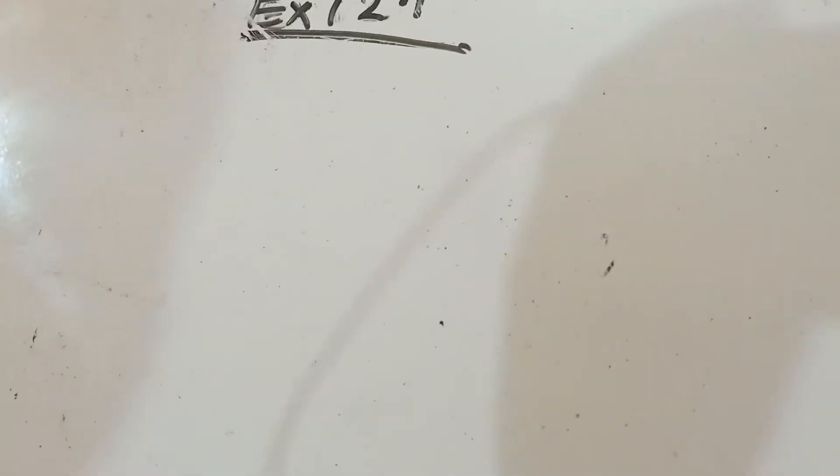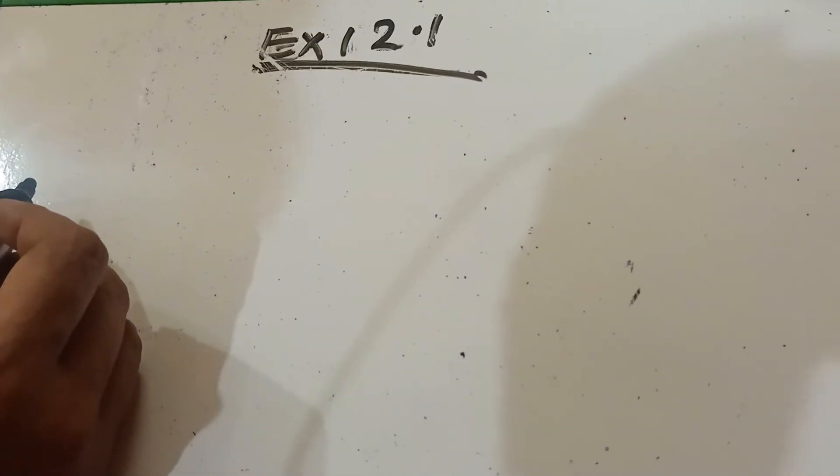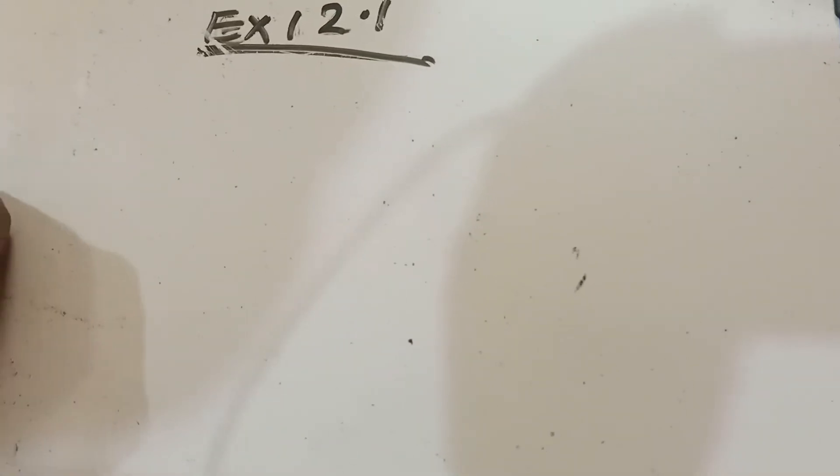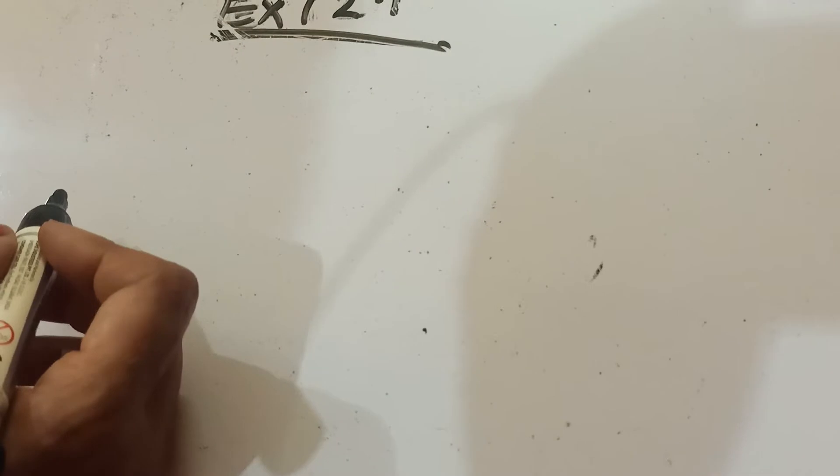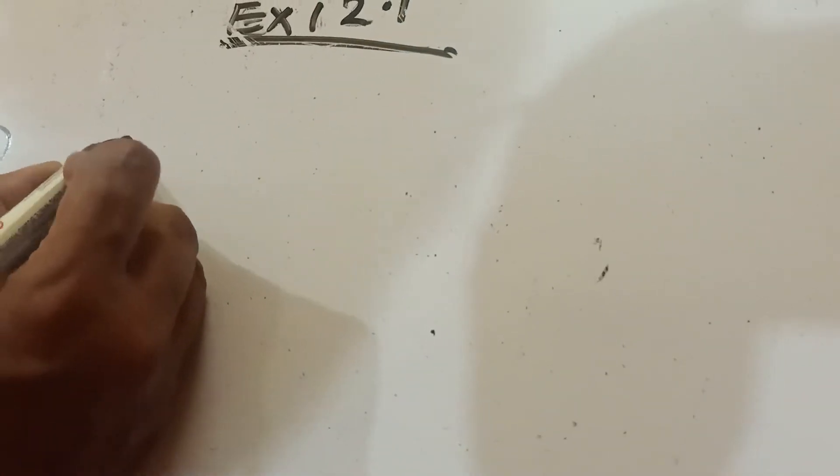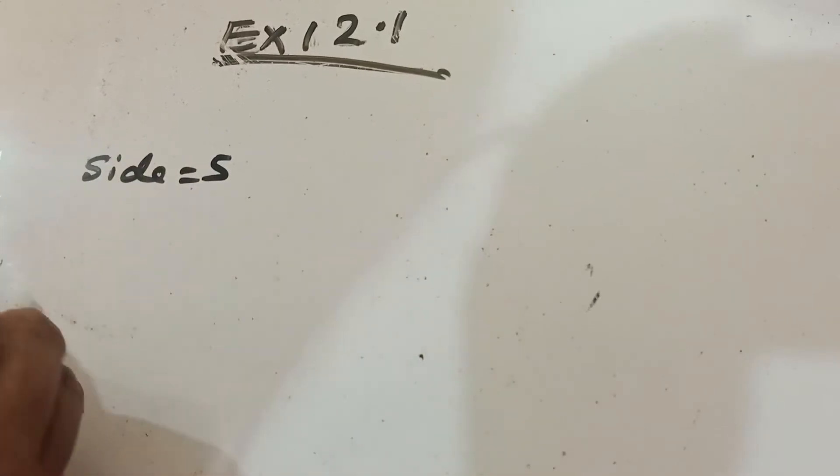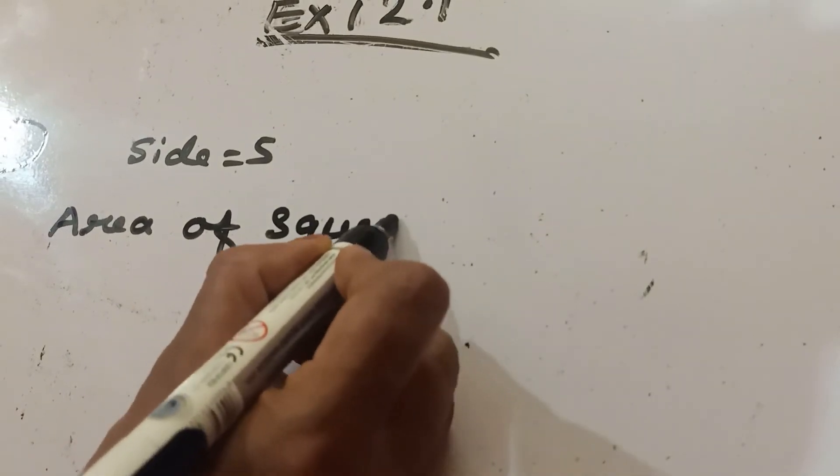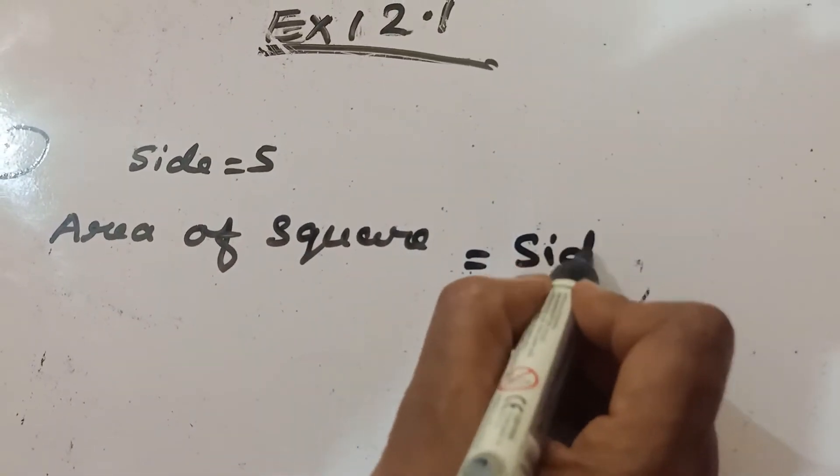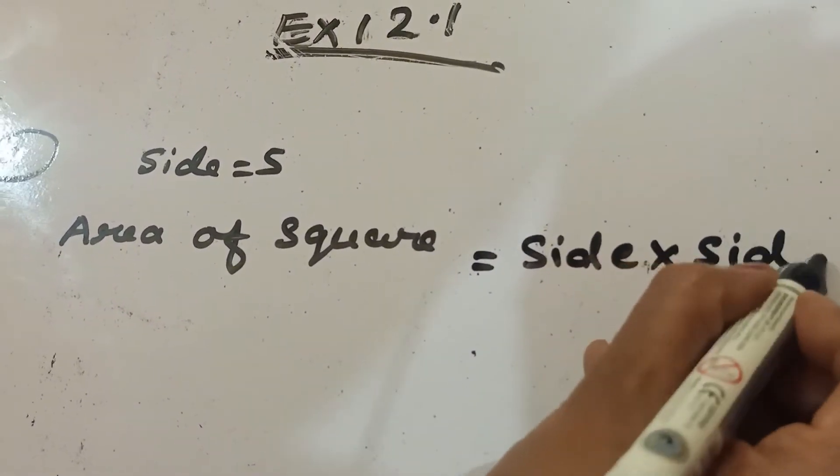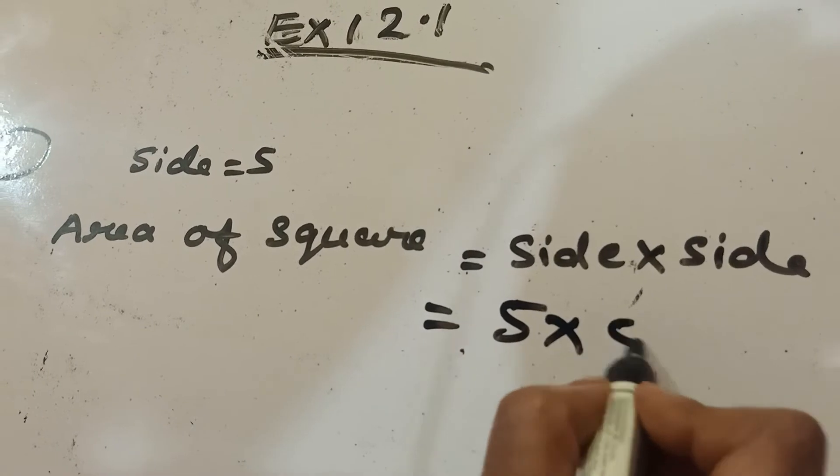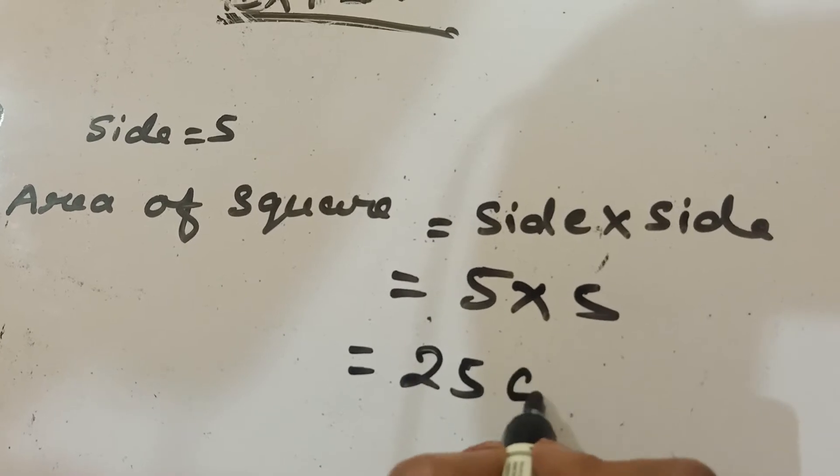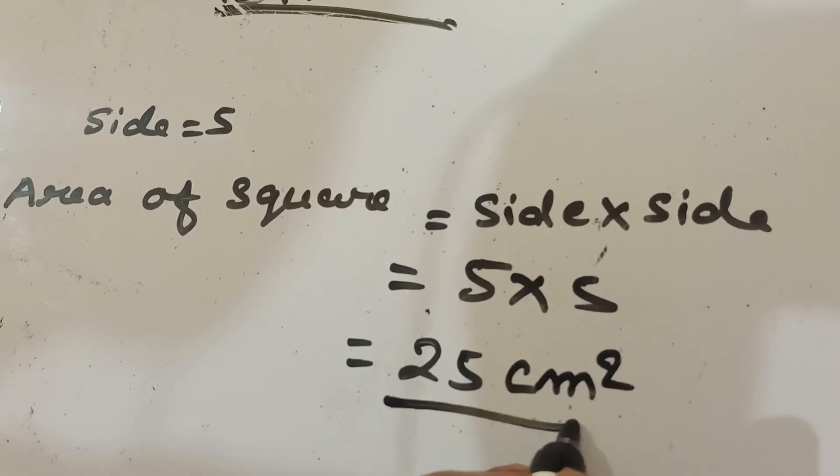Now, see question number three. Find the area of squares. I am taking question number A from third number. Children, you see what is given. One side is equal to five. So first we write area of square is equal to side into side. How can we write? Five into five. So it is twenty-five centimeter square.